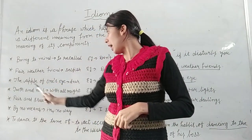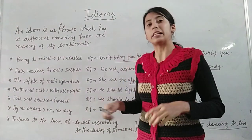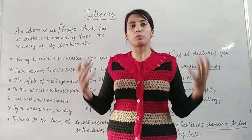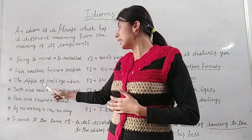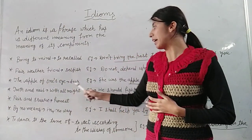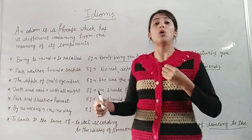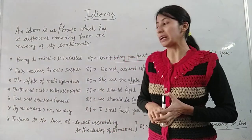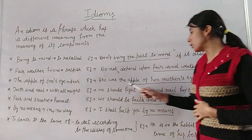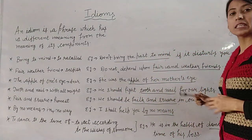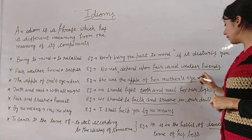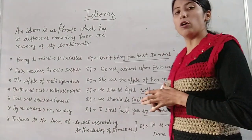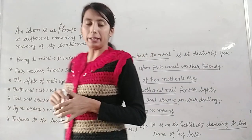Next idiom is 'the apple of one's eye'. Hindi में भी पढ़ा होगा आपने — आँखों का तारा, बहुत प्यारा. जो आपको बहुत प्यारा लगता है. Example: She was the apple of her mother's eye — वो अपनी mother की आँखों का तारा है.